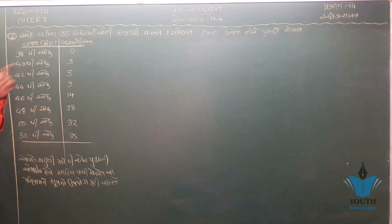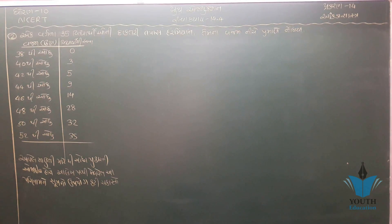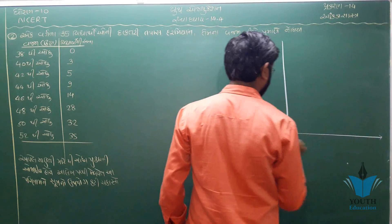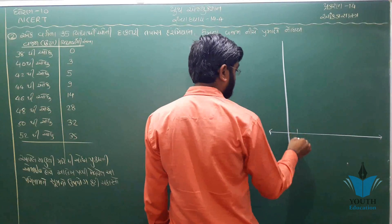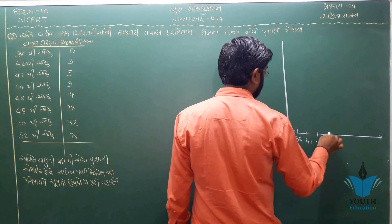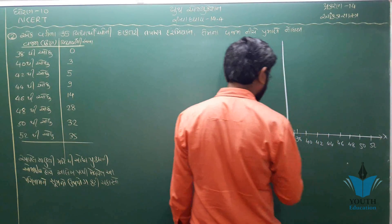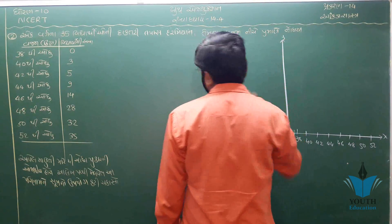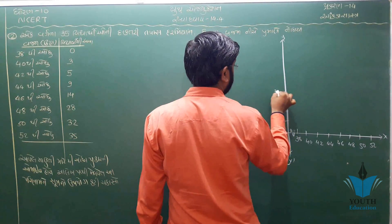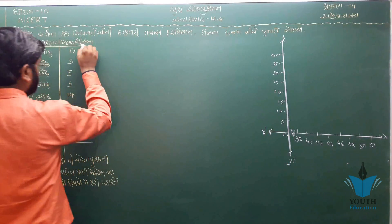આપણને જે કોષ્ટક આપેલો છે, 'થી ઓછા' પ્રકારનું ઓજાઈ દોરવાની છે. પ્રથમ આપણે આલેખ દોરીએ. Y-અક્ષ પર સંચિત આવૃત્તિ અને X-અક્ષ પર 35, 40 સહિત upper class boundaries મૂકીએ. ત્યાં 0 થી શરૂ કરી પ્રથમ આપણે બિંદુ મેળવીએ.